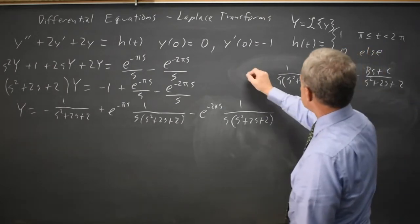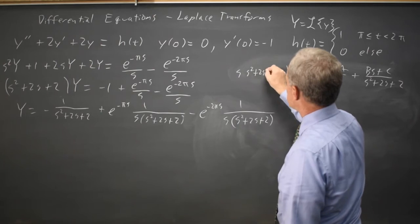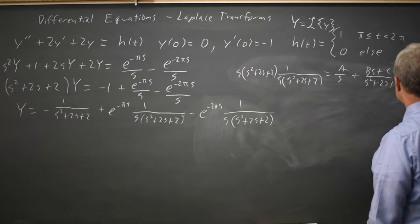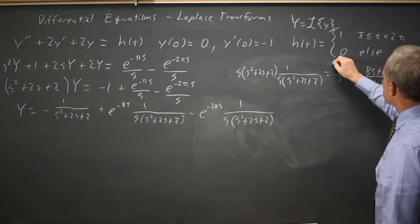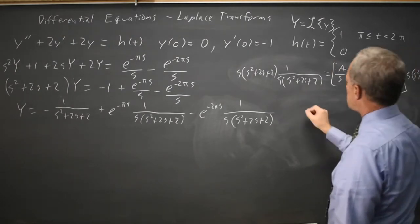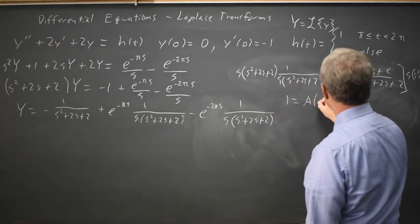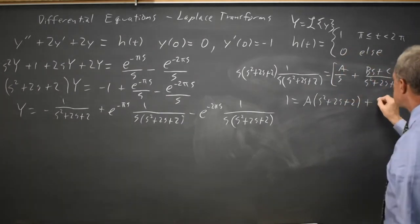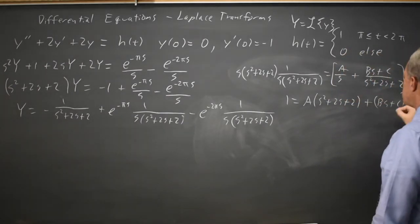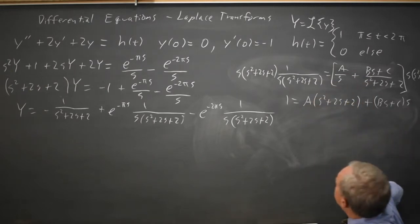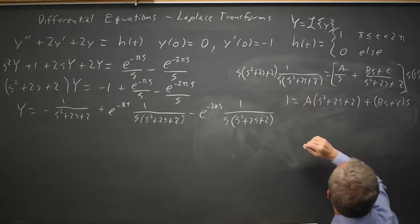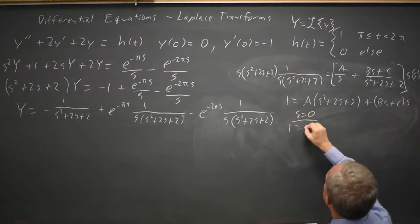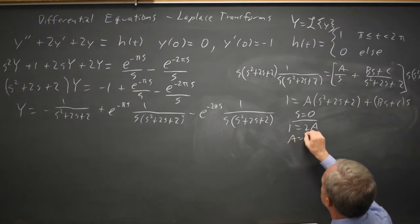Multiplying both sides by the denominator, I get 1 on the left equals A times my quadratic (s squared plus 2s plus 2) plus (Bs plus C) times s. If I substitute in s equals 0, that gives me 1 equals 2A, so A equals 1/2.